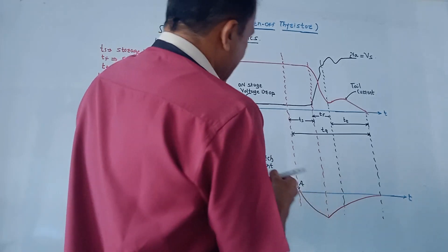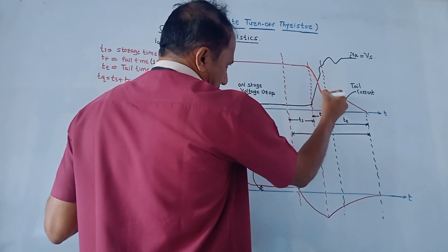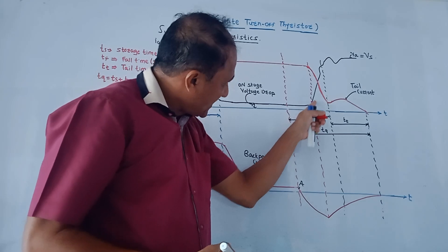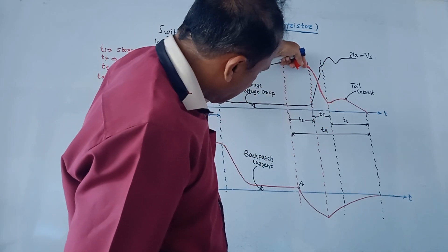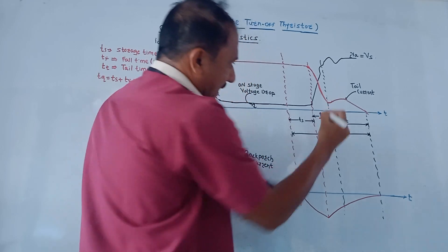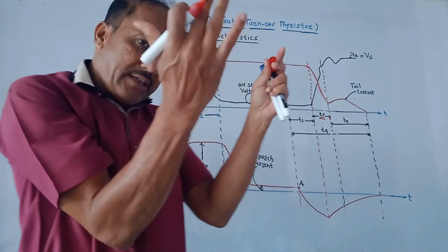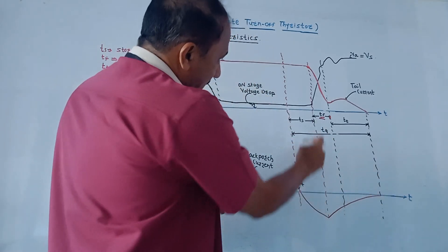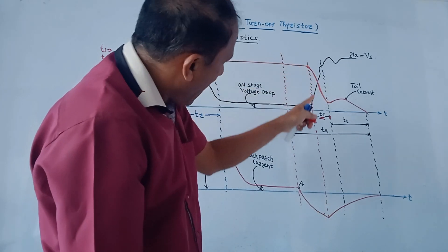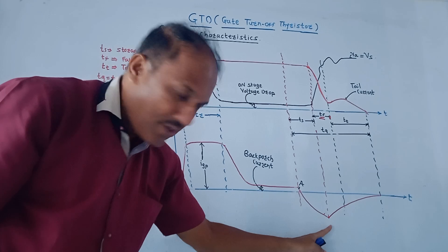Once almost all excess charges are removed, the anode current suddenly starts decreasing and anode voltage starts increasing. The anode current falls with a certain slope. The time period tf, called fall time, begins after ts is completed. At the end of ts, the gate current reaches its maximum negative value, and tf starts.